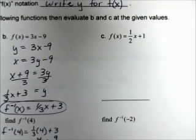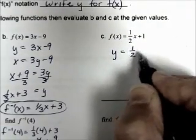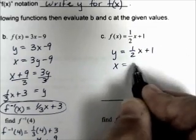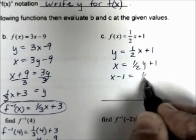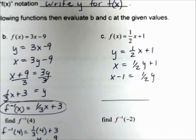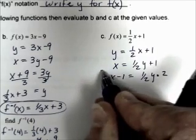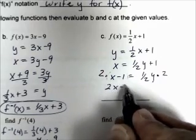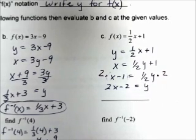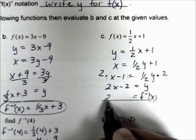For c, f(x) = ½x + 1. Replace f of x with y, switch x and y, then solve for y. Subtract 1: x − 1 = ½y. Instead of dividing by ½, multiply both sides by 2 — the reciprocal — making sure to multiply each term: 2x − 2 = y. So f inverse of x = 2x − 2.